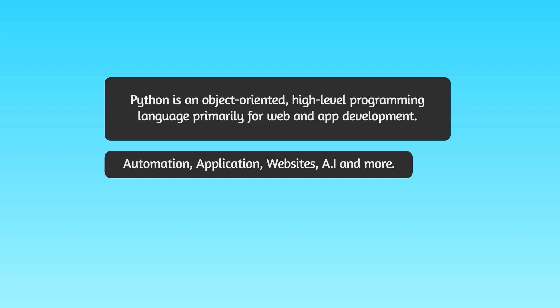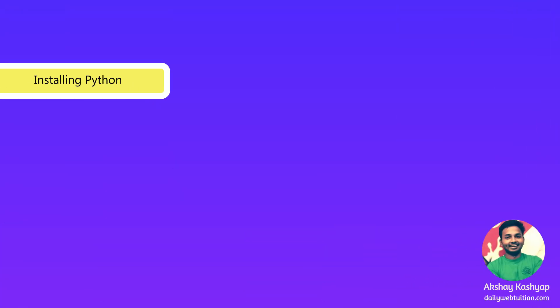Python can be used for rapid prototyping or for production-ready software development. Python was designed for readability and has some similarities to the English language, so learning Python is super easy. Let's take a look at how to install Python in your local system.